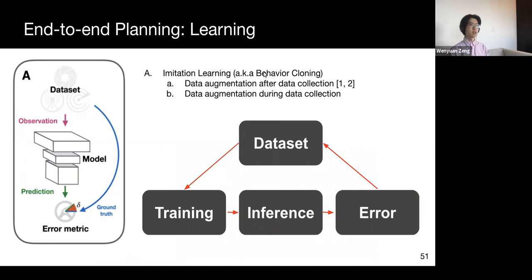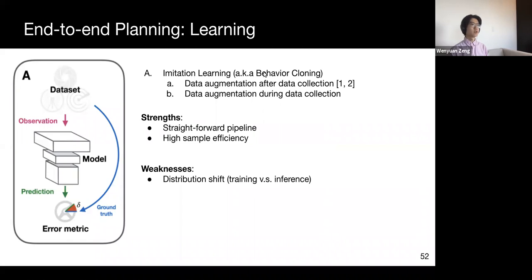Alternatively, we can try to collect and label more diverse data. After training a model with the current dataset, we can deploy the model on a car and then actually drive the car. Whenever dangerous behavior happens, an expert will manually correct the planned trajectory. And this data can be added to the dataset, which will in turn be used to train a better model. So, as we can see, imitation learning is pretty straightforward pipeline. And compared to reinforcement learning, which we'll introduce shortly, this learning scheme has much higher sample efficiency. However, even with the help of data augmentation, the distribution shift is still a challenging problem.